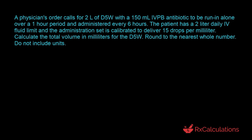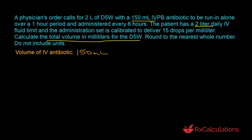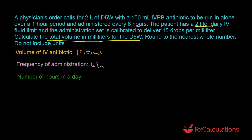In this question, the goal is to determine the total volume in milliliters for the D5W. To do that, we first find the total volume of the IV piggyback antibiotic and subtract it from the patient's daily fluid limit. The daily fluid limit is 2 liters. The patient receives 150 milliliters of IV antibiotic every 6 hours. We need to find how much the patient receives in one day, so we use 150 milliliters divided by 6 hours, multiplied by 24 hours per day.